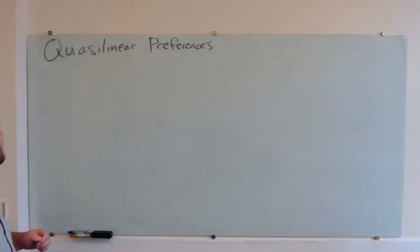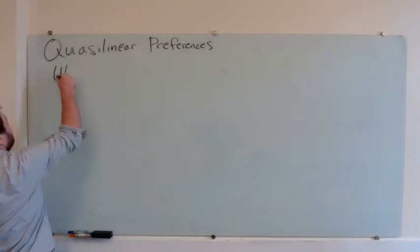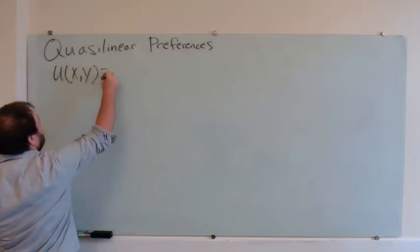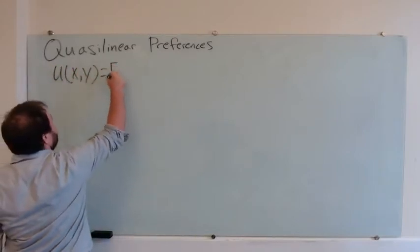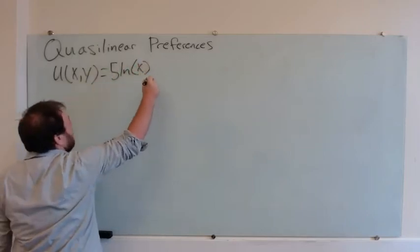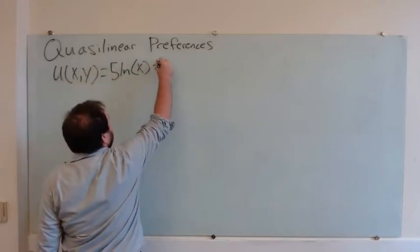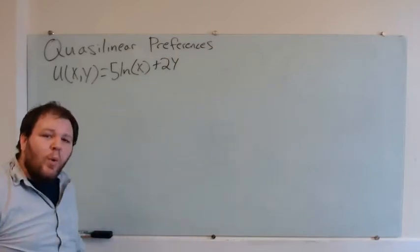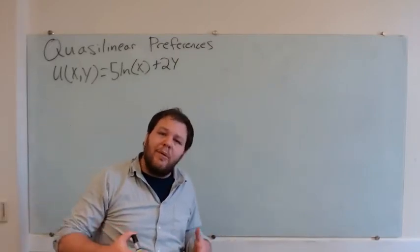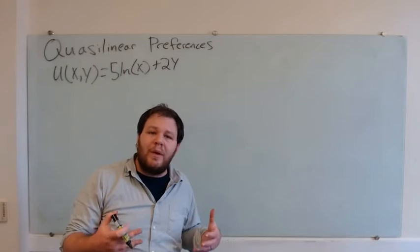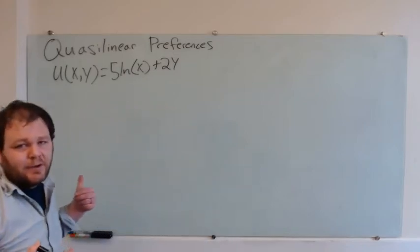Let's think through a more specific example. Maybe something like u of x, y equals 5 times the natural log of x, plus 2 times y. And let's think about what our MRS is going to be — what our preferences look like when we have this sort of quasi-linear utility function.